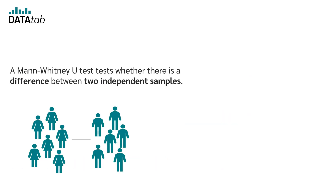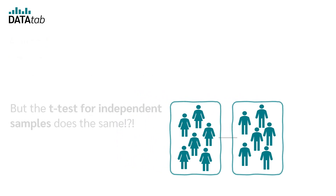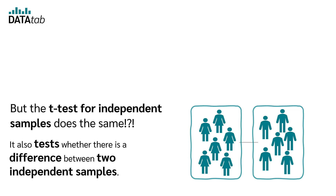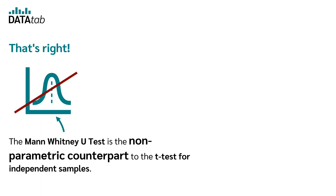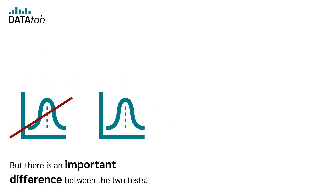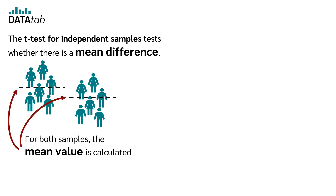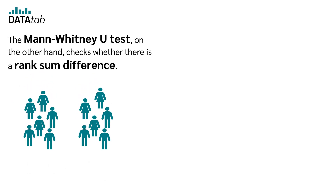A Mann-Whitney-U test tests whether there is a difference between two independent samples — for example, whether there is a difference between the reaction time of women and men. The t-test for independent samples does the same, but the Mann-Whitney-U test is the nonparametric counterpart to the t-test. The t-test tests whether there is a mean difference, while the Mann-Whitney-U test checks whether there is a rank sum difference.